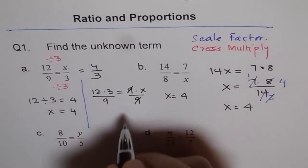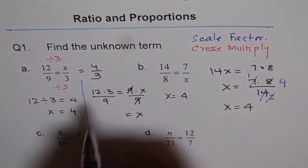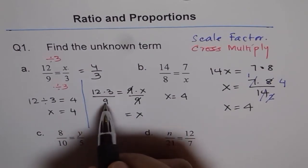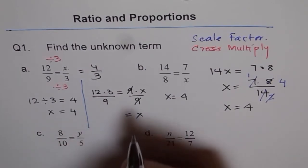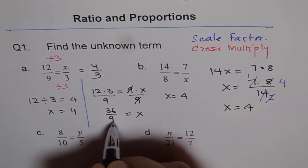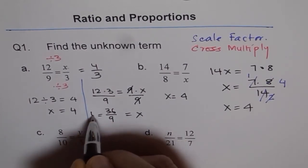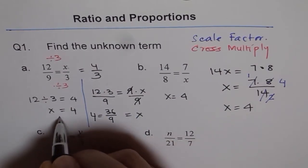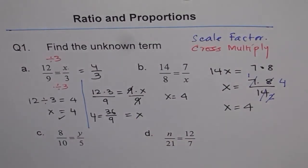The 9s cancel, and we get x = (12 × 3)/9. 12 × 3 = 36, so we get 36/9, which is 4. So x = 4, the same answer we got previously using scale factor.